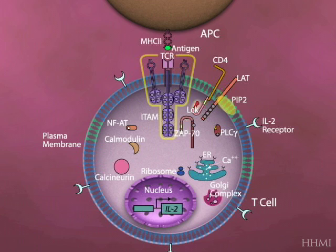Calcineurin is an enzyme that actually removes phosphate — not from tyrosine, but from serine threonine residues. And it will allow the nuclear factor of activated T cells, called NFAT, to go from the cytoplasm into the nucleus.